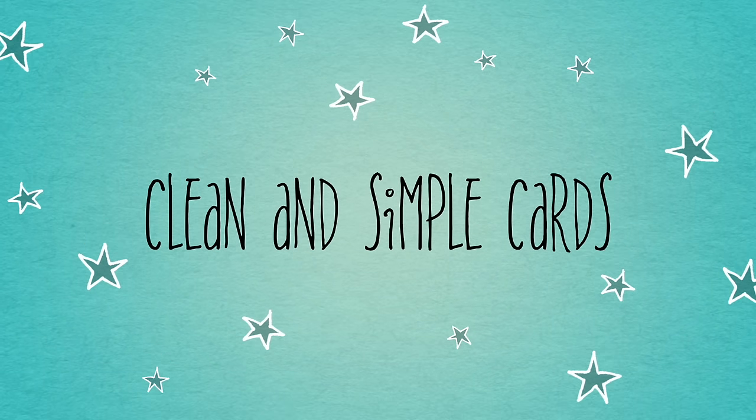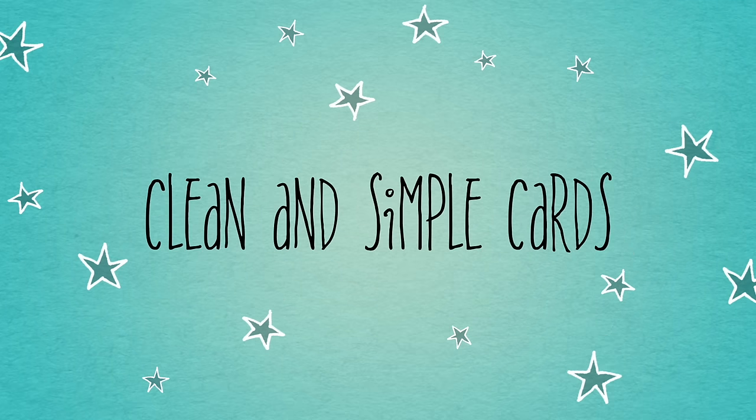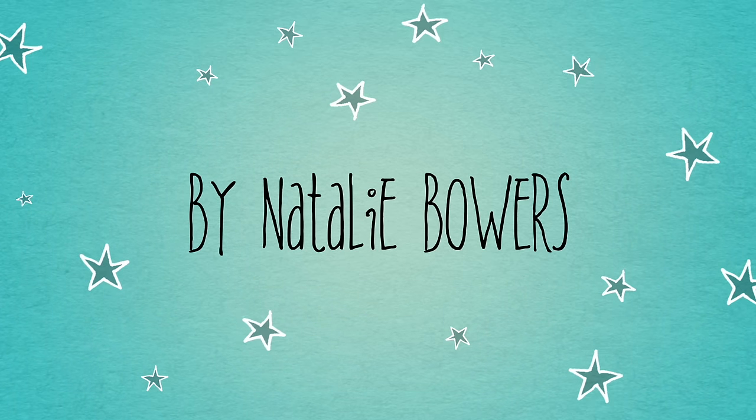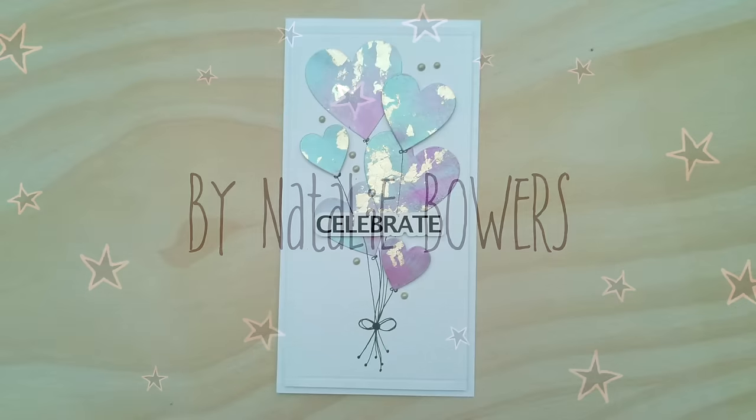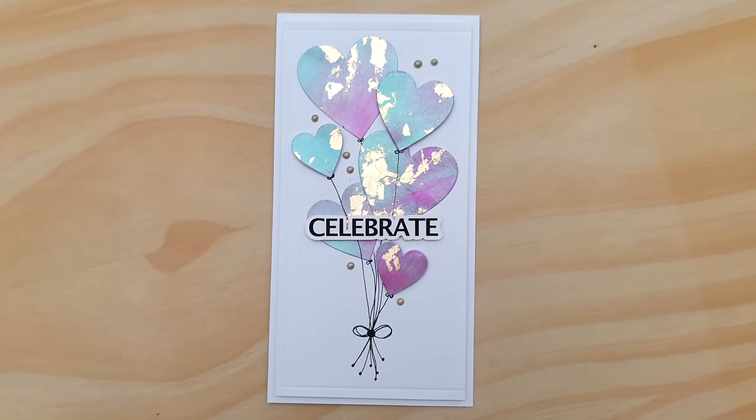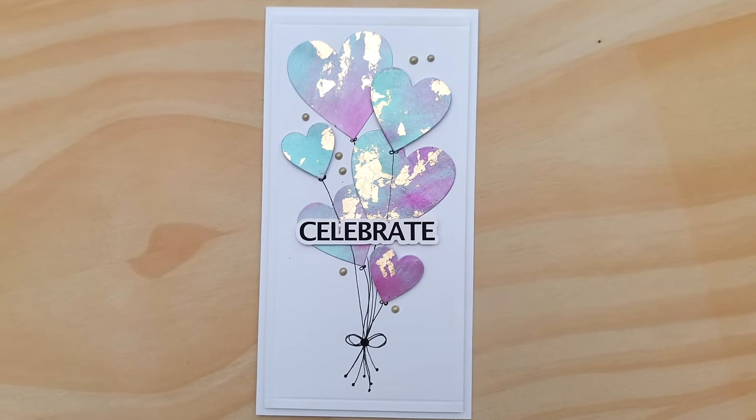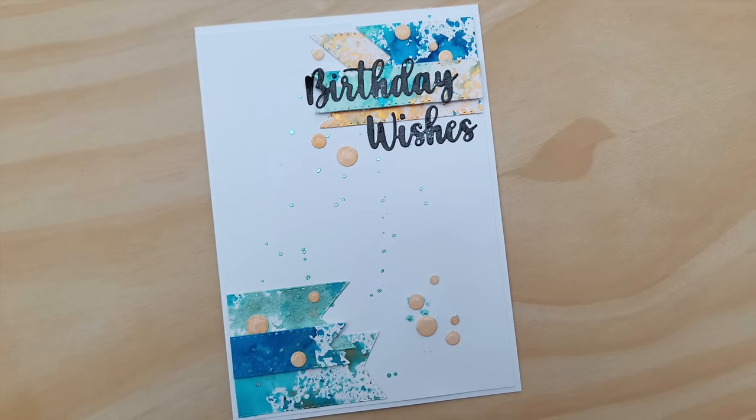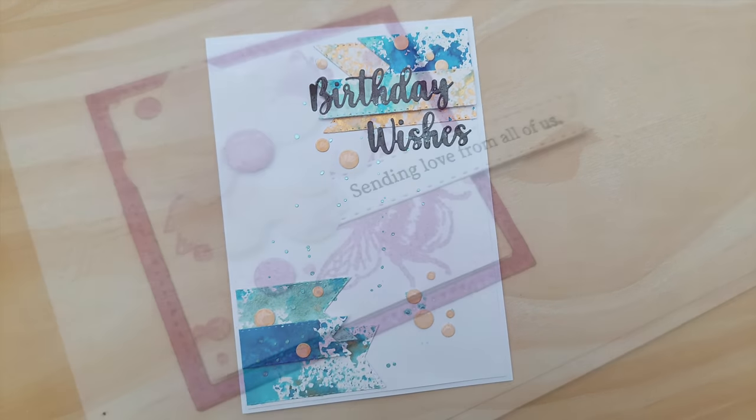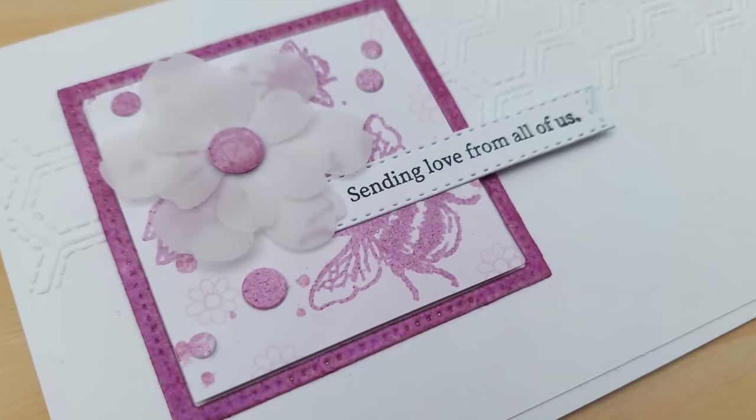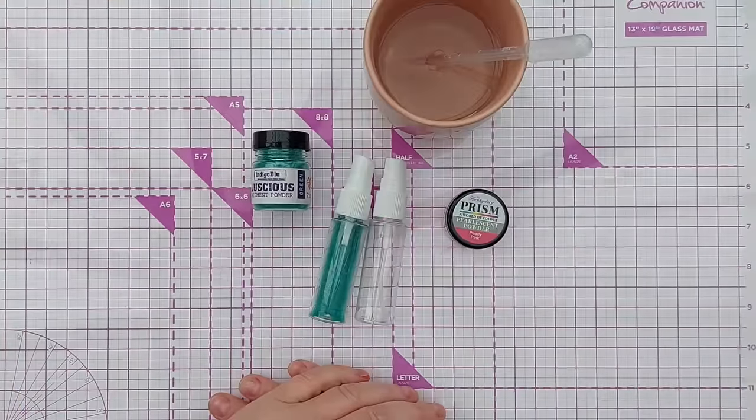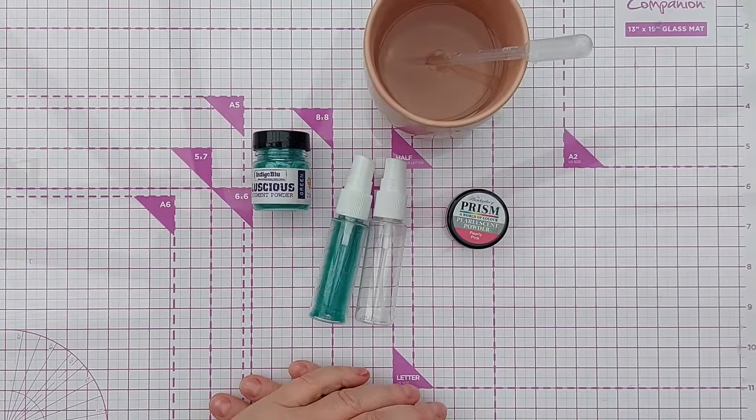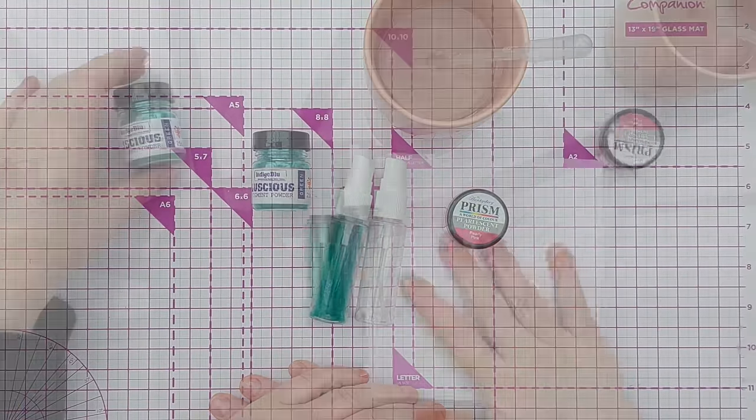Hello crafty friends, welcome to the fourth episode in my Pigment Powders 101 series. So far we've looked at using pigment powders dry with gilding flakes, made paints and done splattering and smushing, and used them to make our own embossing powders. Today we're going to use them to make our own shimmer sprays.